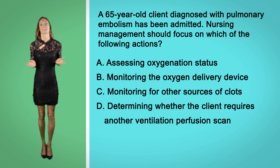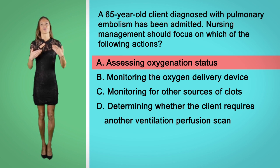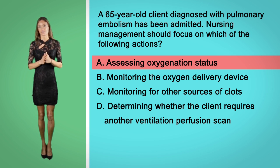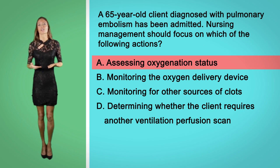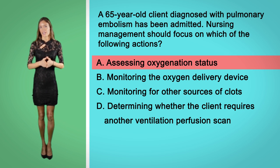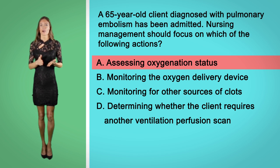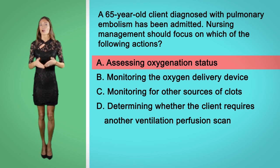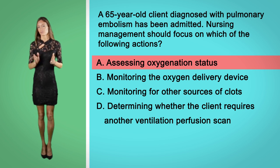The correct answer here is option A. Nursing management in the pulmonary embolism client is focused on assessing the oxygenation status and ensuring that treatment is adequate. If the client's status begins to deteriorate, it is the nurse's responsibility to inform the physician and attempt to improve the oxygenation status. Ensuring that the oxygen delivery device is working properly and monitoring for other clot sources are other nursing responsibilities, but they are not the focus of the care.